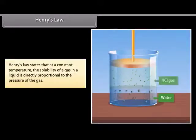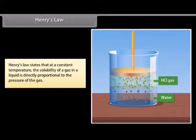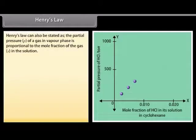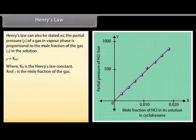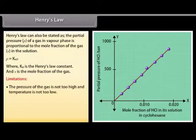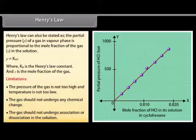Henry's Law states that at a constant temperature, the solubility of a gas in a liquid is directly proportional to the pressure of the gas. It can also be stated as: the partial pressure of a gas in vapor phase is proportional to the mole fraction of the gas in the solution: P = K_H × X, where K_H is the Henry's Law constant and X is the mole fraction of the gas. Limitations: the pressure of the gas should not be too high and the temperature not too low; the gas should not undergo any chemical change; and the gas should not undergo association or dissociation in the solution.